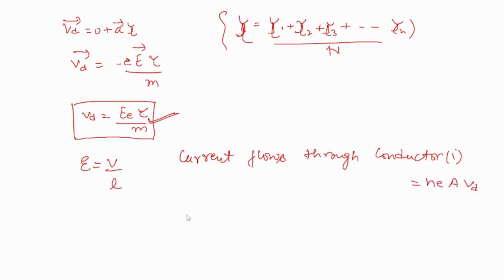From here, I equals, you can write Vd as eE tau by m. From here you can write I as ne squared A tau upon m into V by L. On putting the value of Vd from this equation, from here I upon V equals ne squared A tau upon mL.